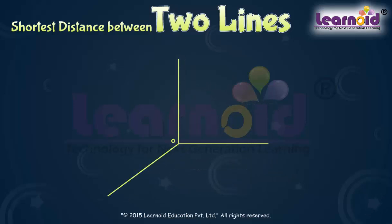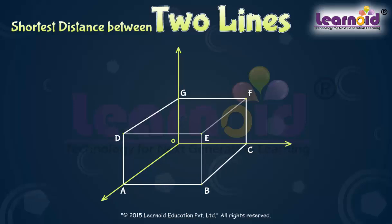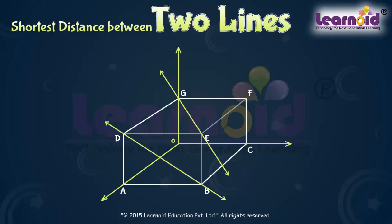If we take a cuboid at the origin in 3 dimensions, then the line passing through points G and E on the upper plane is neither parallel nor intersecting with the line passing through B and D on the front plane. These are skew lines.